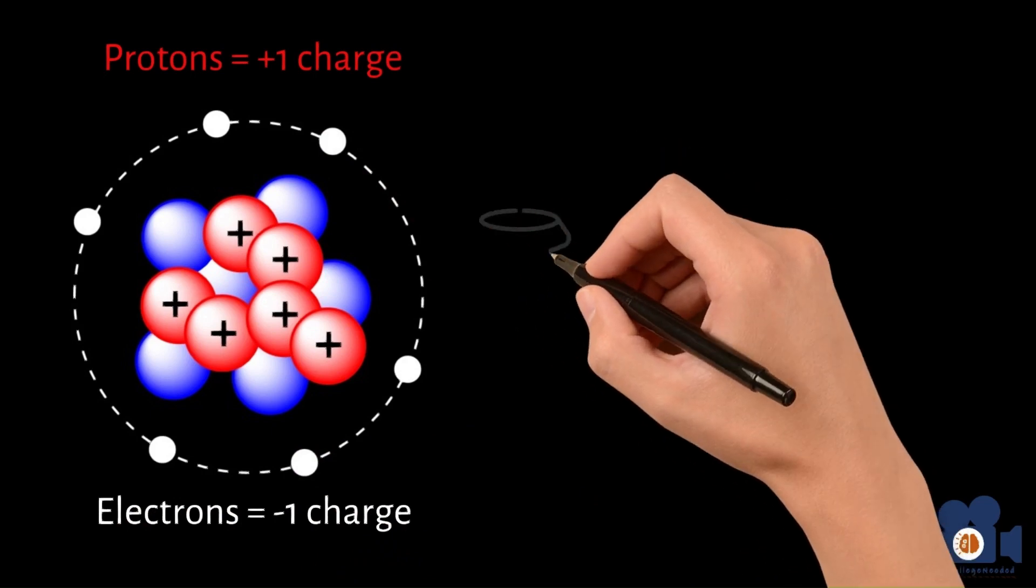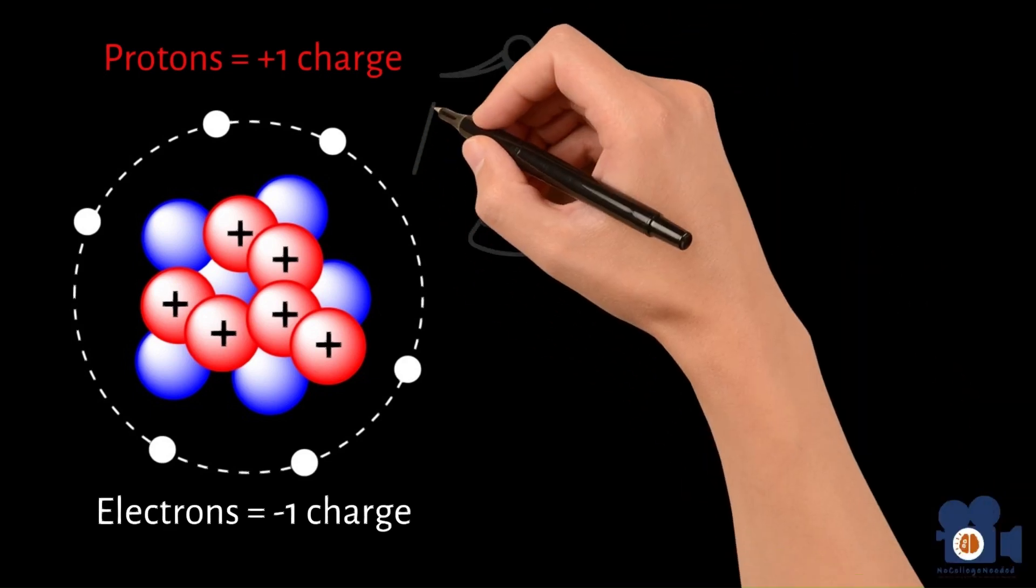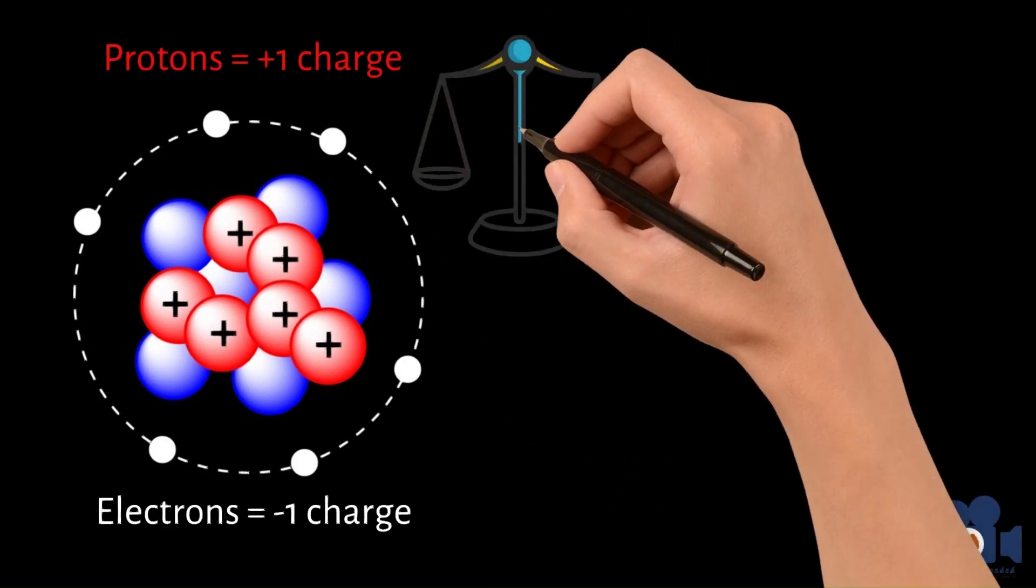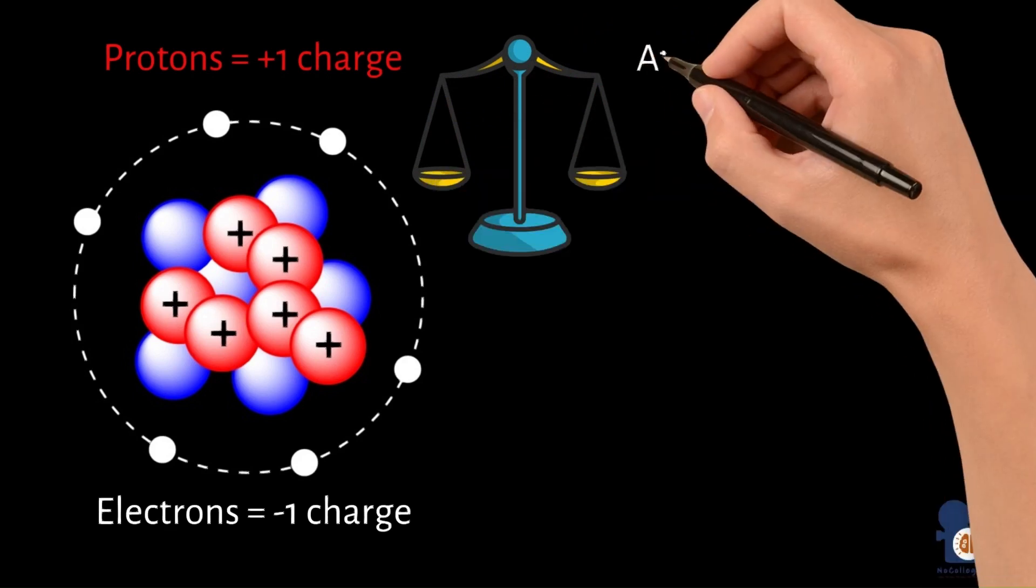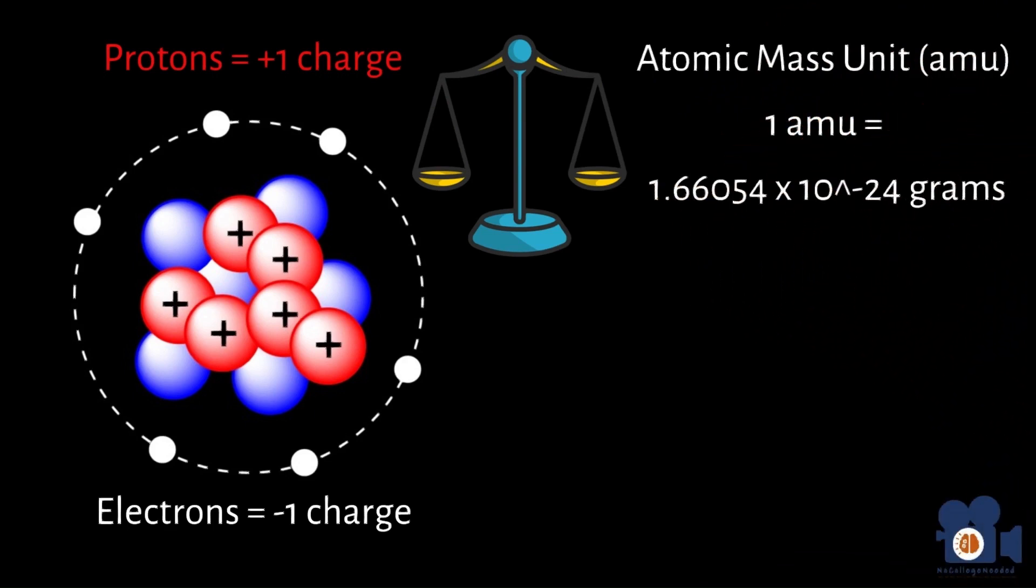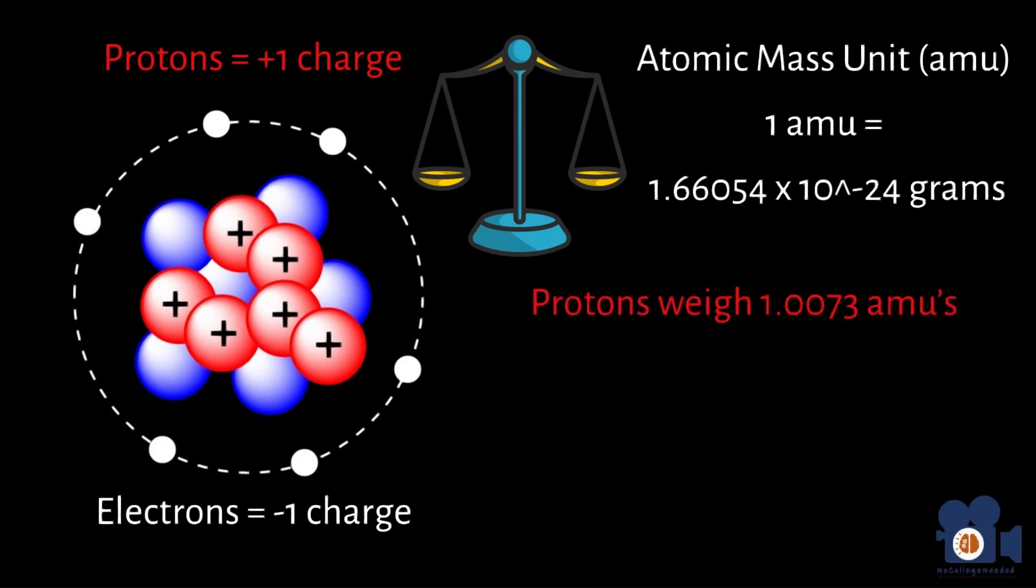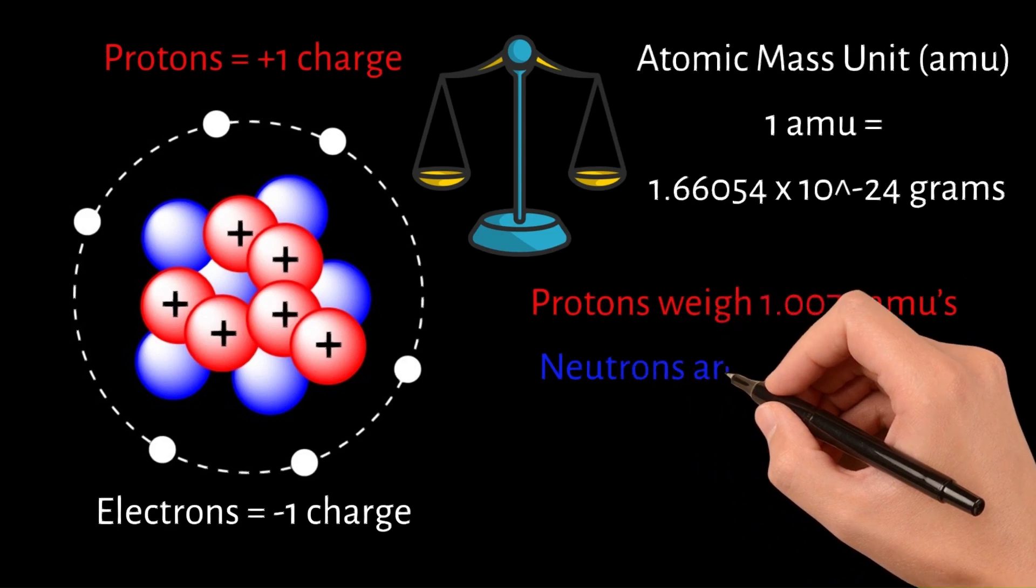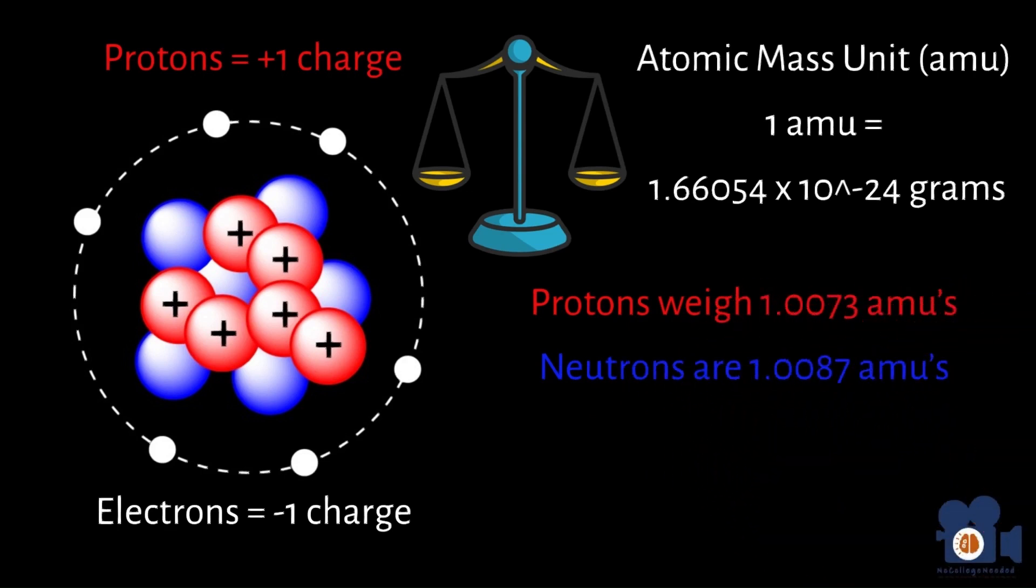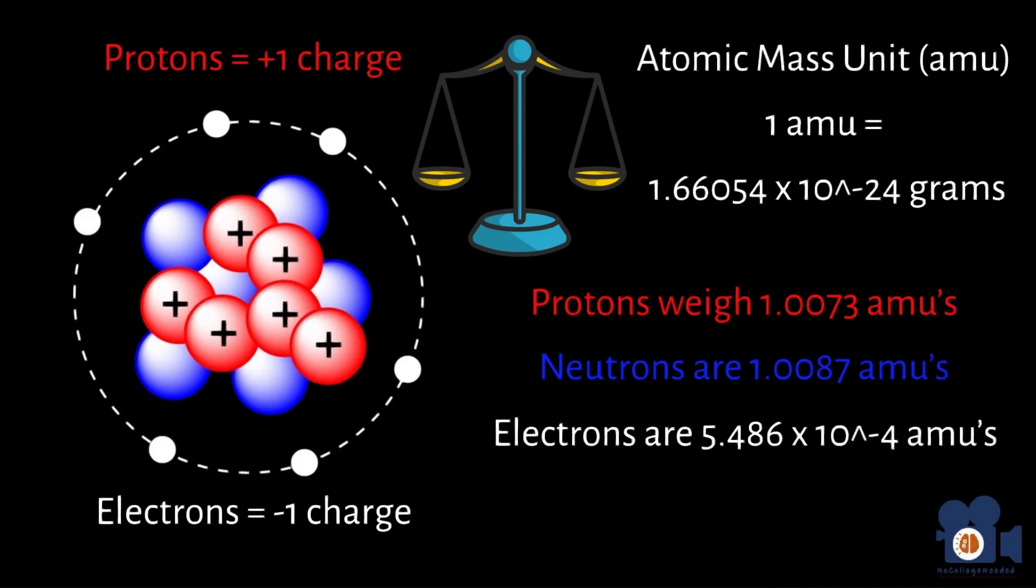Another simplification in chemistry with subatomic particles deals with their masses. Because the masses are extremely small, we created the atomic mass unit, AMU, where 1 AMU equals 1.66054 times 10 to the negative 24th grams. Protons weigh approximately 1.0073 AMUs, neutrons are 1.0087, and electrons are 5.486 times 10 to the negative 4th AMUs.